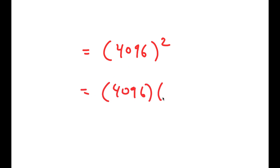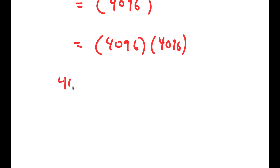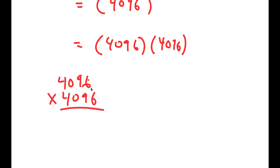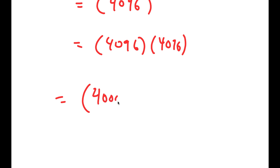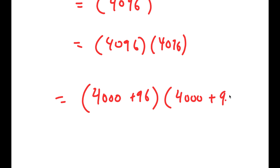What most people would do is just multiply 4096 times 4096 using the conventional method, however this method takes way too long and it's really easy to make an error. So instead, to more easily solve this, I'm going to rewrite this as (4000 plus 96) times (4000 plus 96).